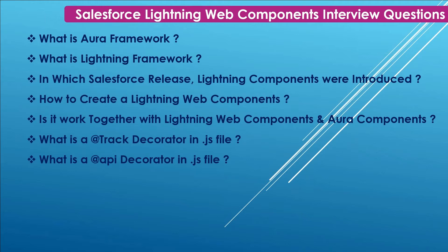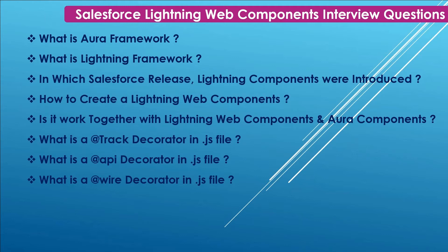Next: What is the @api decorator in the JavaScript file? It is used to expose the public property of the web component. This property can then be used in its parent component. Next: What is the @wire decorator in the JavaScript file?